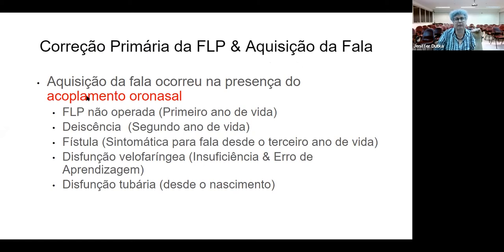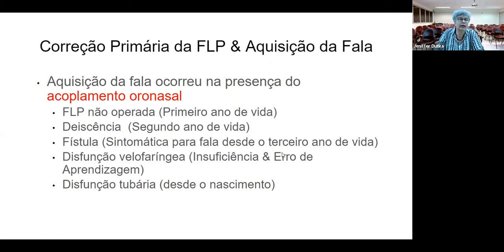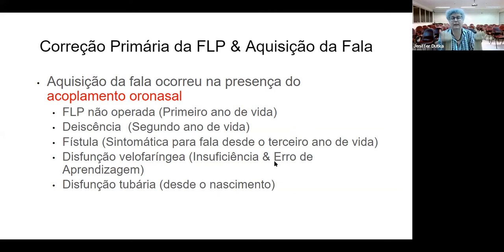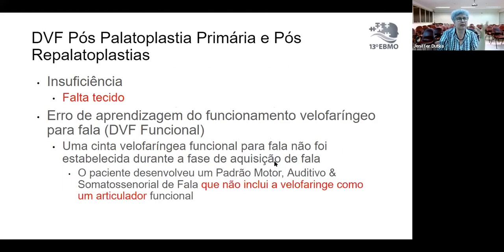During his first year of life the cleft palate was not operated. In the second year he had dehiscence, and in the third year he had a fistula and insufficiency. So he acquired what we call velopharyngeal mislearning — for him, speech motor processing does not involve the velopharynx. Additionally, because the muscles of the soft palate are the same muscles that open the Eustachian tube, he has had Eustachian tube dysfunction since birth.